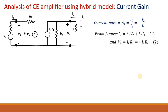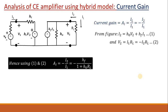Using those two equations, we can calculate AI = −HF / (1 + HO·RL). If RL is much less than 1/(10·HO), then we can approximately write current gain ≈ −HF. This HF uses standard notation — the current gain for an amplifier is approximately equal to beta, and beta equals HFE, where E stands for common emitter. So the current gain is −HFE.